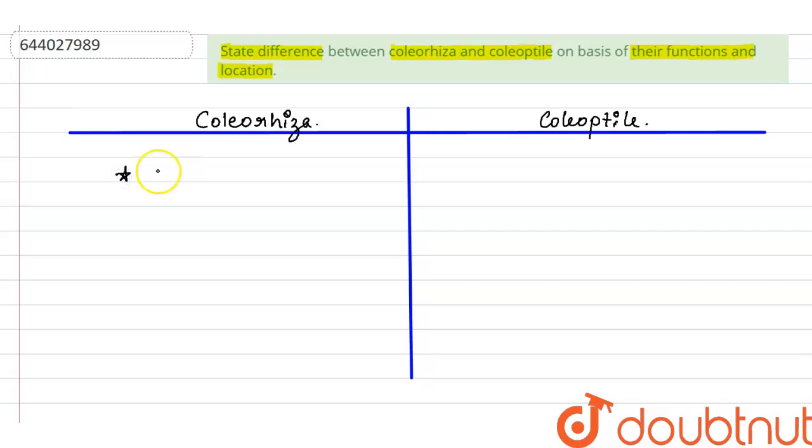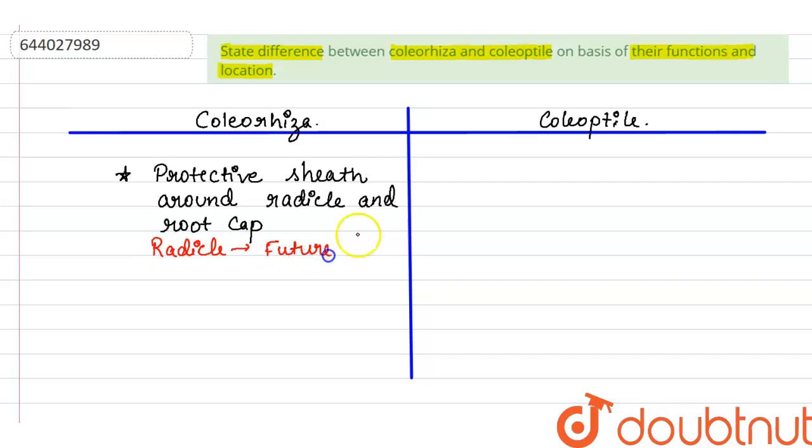So first is function. It is a protective sheath around the radicle and root cap. So it protects radicle. So what is radicle? Radicle will develop into future root.